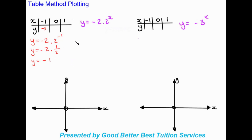For x = 0: y = -2 × 2^0 = -2 × 1 = -2. Very importantly, where x = 0 that is our y-intercept. So the y-intercept is at x = 0, y = -2, which we can plot on the y-axis at negative 2.